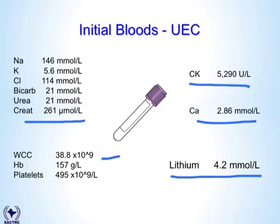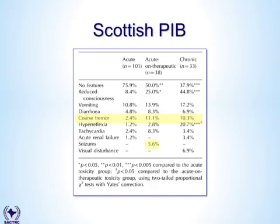His raised white cell count was in part due to an aspiration pneumonia. This data from the Scottish Poison Centre examines all patients referred with lithium poisoning, separated into three groups: acute, acute on therapeutic, and chronic. The acute group describes patients who have not had any background lithium treatment and have taken a single ingestion for the first time — so there is no body load of lithium.